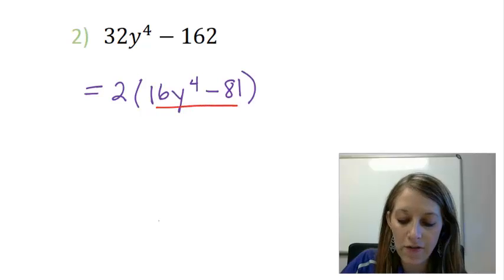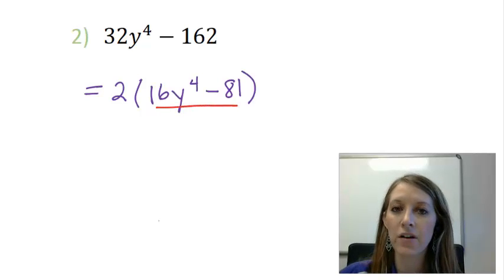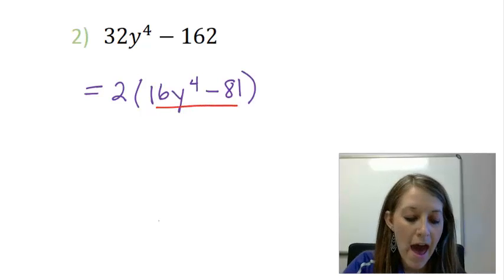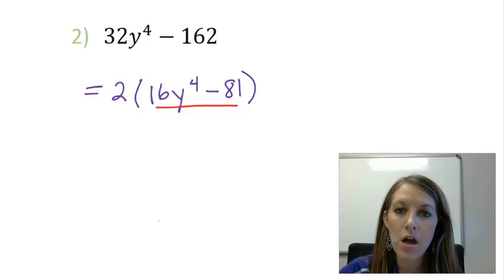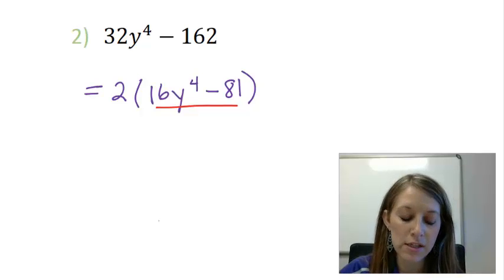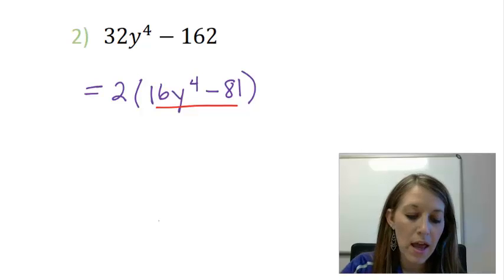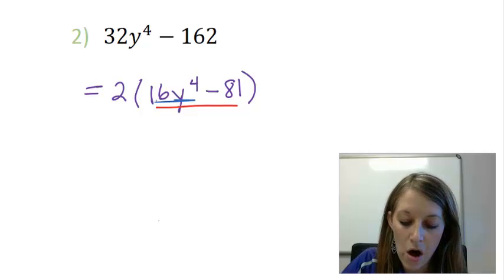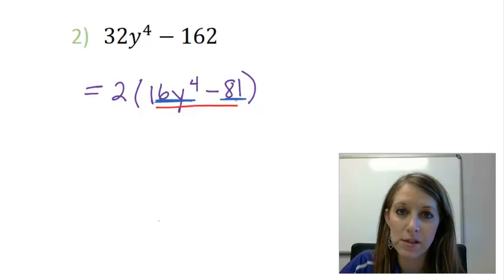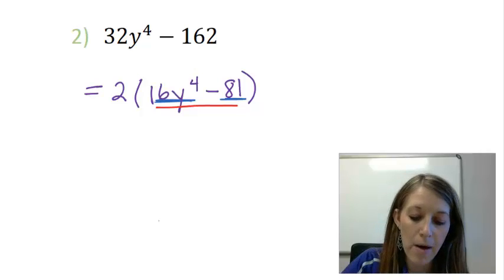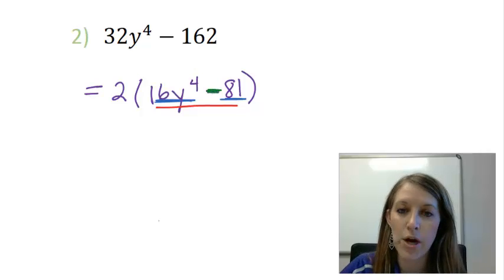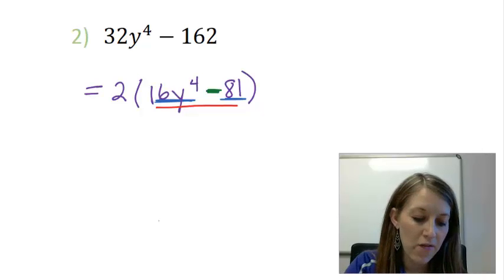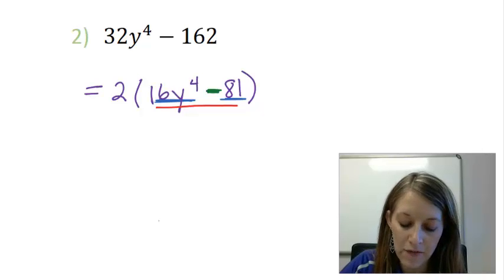Now, look at your parentheses. Confirm that you don't have any more common factors and you don't. We have two terms here. So we want to make sure that this is a difference of squares. If I look at all of my terms, they all are squared pieces, so that's okay. And my operation is a subtraction. So I can, in fact, factor this by a difference of squares.